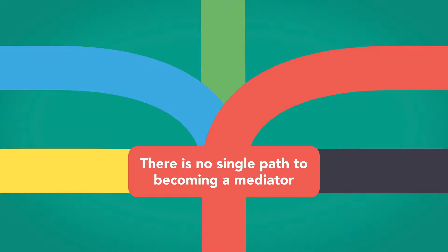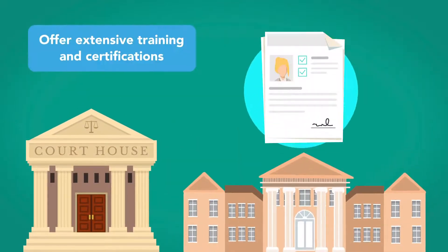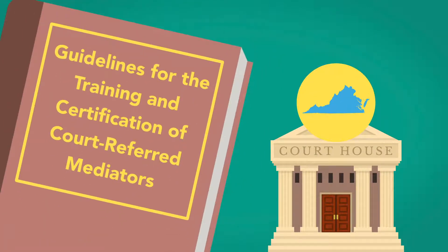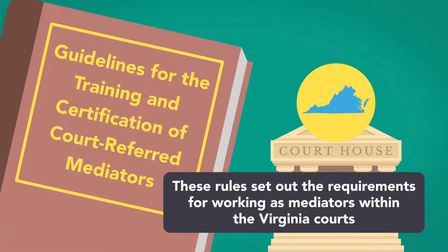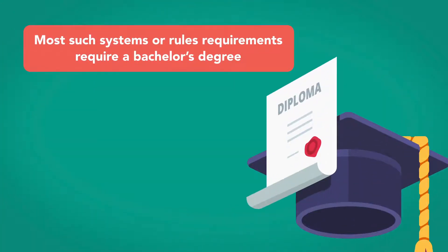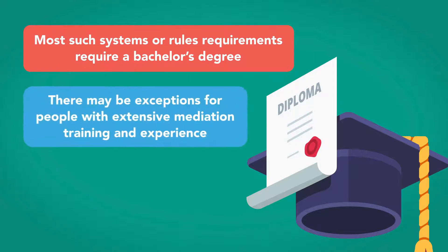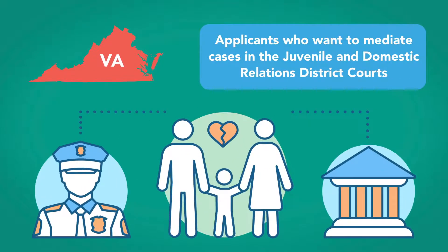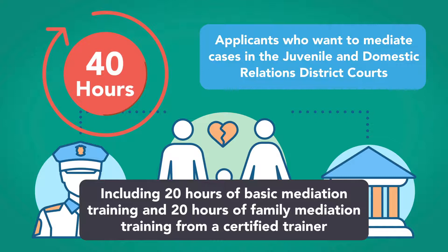While there is no single path to becoming a mediator, many court systems and colleges offer extensive training and certifications. For example, the Virginia state courts utilize guidelines for the training and certification of court-referred mediators, setting out the requirements for working as mediators within the Virginia courts. Most such systems require a bachelor's degree at a minimum, but there may be exceptions for people with extensive mediation training and experience. Courts also typically require potential mediators to work under a certified mediator for a specified time. In Virginia, applicants who want to mediate cases in the juvenile and domestic relations district courts must complete 40 hours of mediation training, including 20 hours of basic mediation training and 20 hours of family mediation training from a certified trainer.